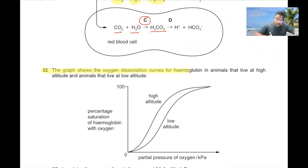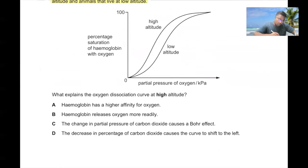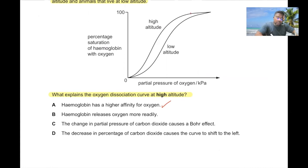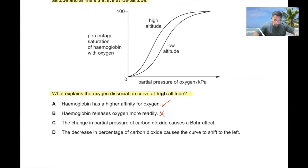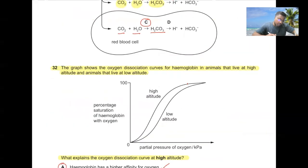Question number thirty-two. The graph shows the oxygen dissociation curve for hemoglobin in animals at high altitude versus low altitude. Hemoglobin at high altitude has a higher affinity for oxygen, reaching 100% saturation at a lower partial pressure of oxygen. It does not release oxygen more readily, and the other options regarding carbon dioxide and Bohr shift are incorrect. A is the correct answer.